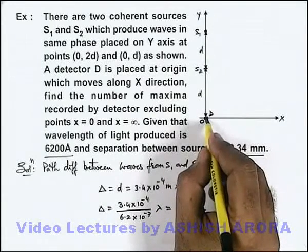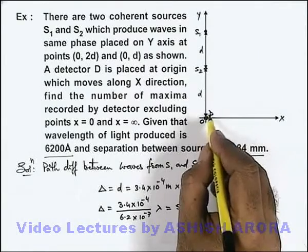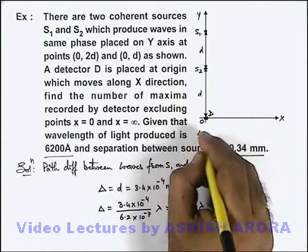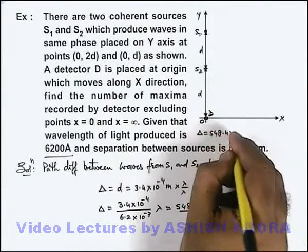That means here, the path difference in the interference of the two waves from S1 and S2 at detector is 548.4 lambda.